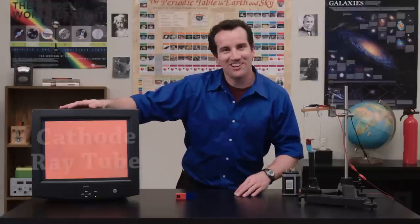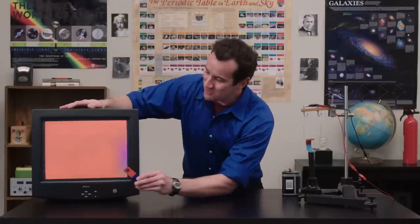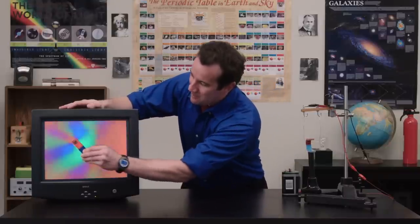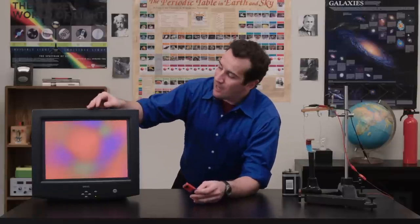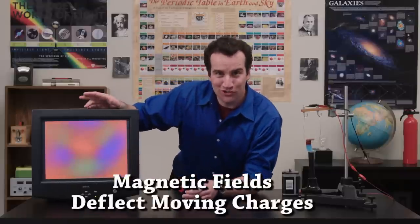Check this out. A cathode ray tube computer screen, and look what my magnet does to it. You see, this screen is illuminated by electrons that pass from the back to the front, and what most people don't know is that magnetic fields can deflect moving charges.